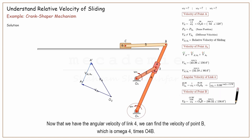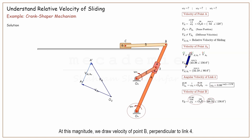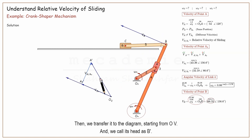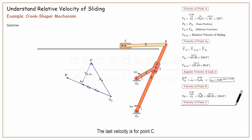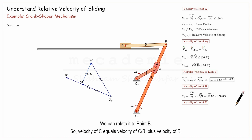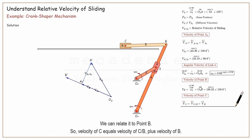Now that we have the angular velocity of link 4, we can find the velocity of point B, which is omega 4 times O4B. At this magnitude, we draw the velocity of point B perpendicular to link 4, then transfer it to the diagram starting from OV and call its head B'. The last velocity is for point C. We can relate it to point B, so velocity of C equals velocity of C with respect to B plus velocity of B.